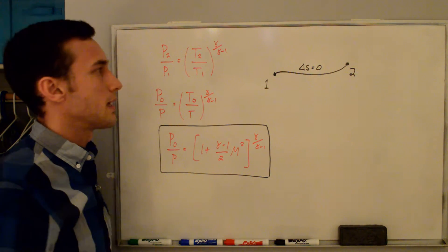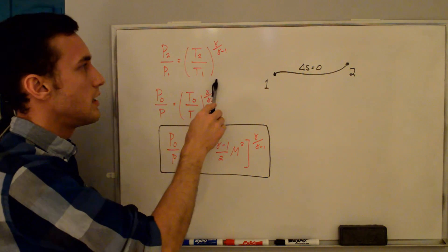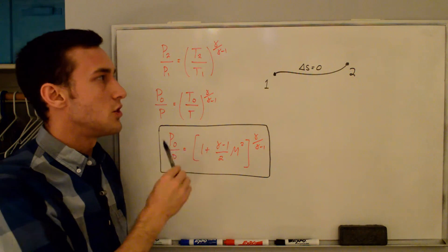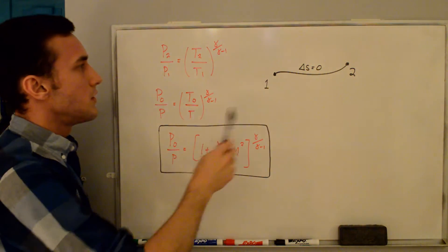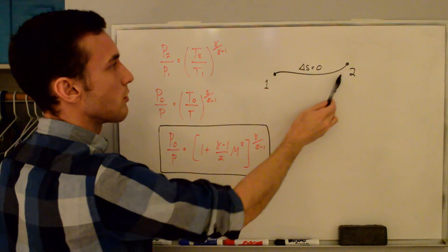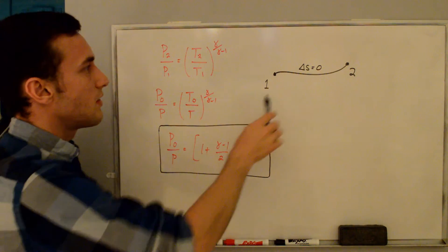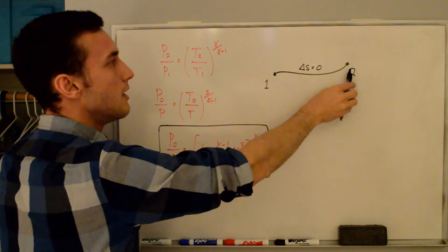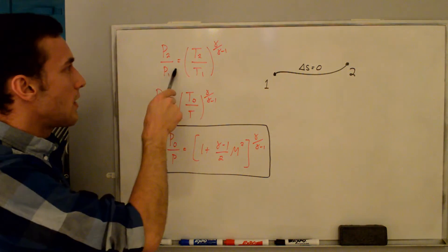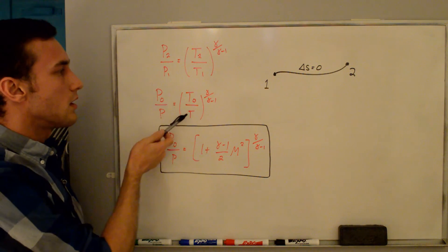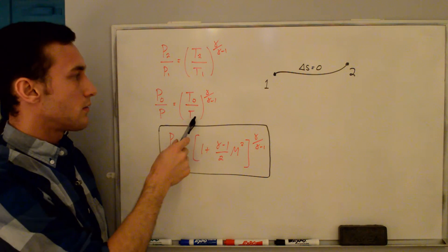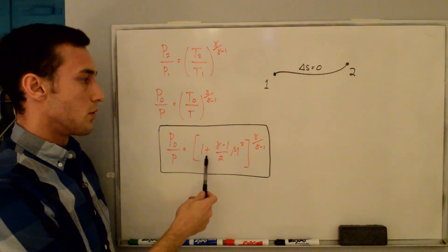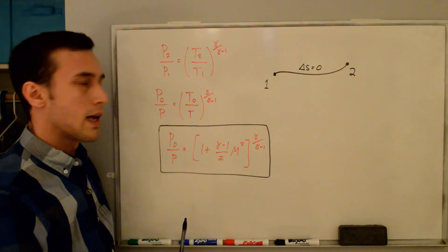Now let's define the stagnation to static pressure ratio. The isentropic relation was derived by setting the entropy change ΔS = 0, relating state one and state two along a path where entropy does not change. Setting state two as where velocity equals zero means we've slowed the flow from state one to state naught isentropically. We rewrite the isentropic relation as P₀/P = (T₀/T)^(γ/(γ−1)). Plugging in our stagnation to static temperature ratio gives: P₀/P = [1 + (γ−1)/2 · M²]^(γ/(γ−1)).